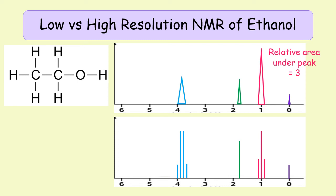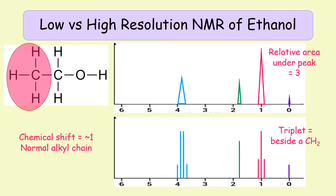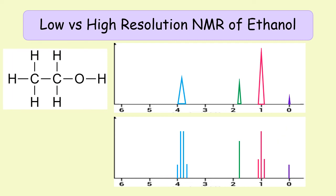Looking at ethanol's low resolution spectrum: the first signal has a relative area under the peak of three, which leads us to believe it's the CH3 group. Its chemical shift is around 1, and looking at the NMR table on page 17, that tells us it is a carbon hydrogen bonded only to another carbon. In high resolution, this signal is split into a triplet. By the N+1 rule, a triplet means there are two neighboring protons, so using all that information together we confirm this must be our CH3 group.